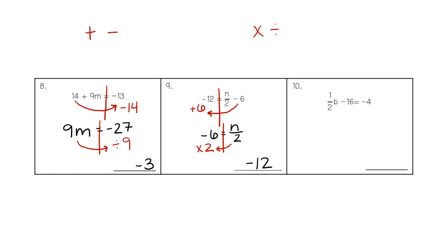For number 10, drawing the line down the equal sign, you can see that ½ and negative 16 are on the left-hand side and negative 4 is on the right. We start with the whole number, negative 16, and do the opposite: plus 16. We still have the ½B. On the calculator, negative 4 plus 16 gives 12. Then we move the ½B by doing the opposite and dividing: 12 divided by ½ is 24.